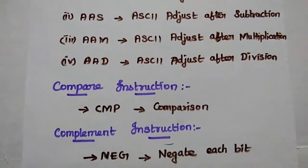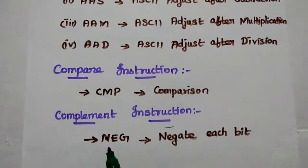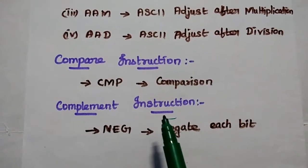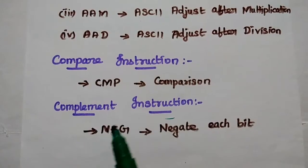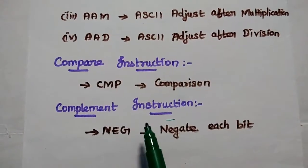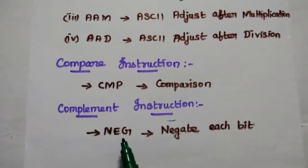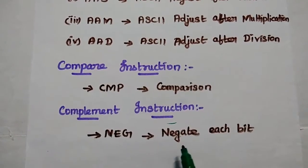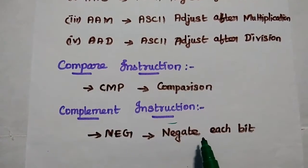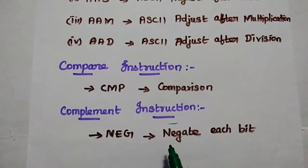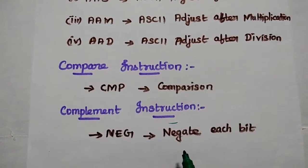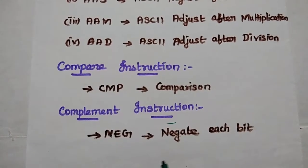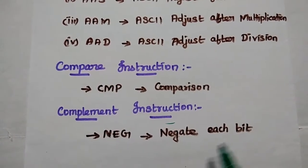Next is the Compare Instruction, which is mainly used to compare given data. Next is the Complement Instruction, represented as NEG — that is Negate Each Bit. If 1 is given, it is complemented as 0. If 0 is given, it is complemented as 1. These are all the Arithmetic Instructions used in the 8086 Microprocessor.